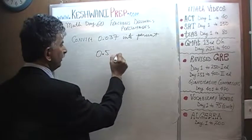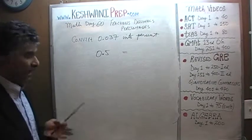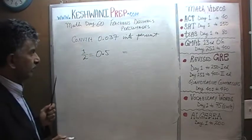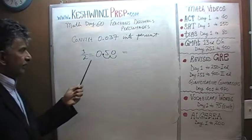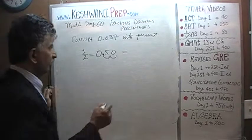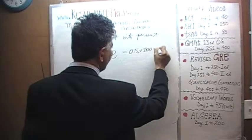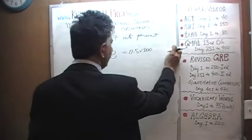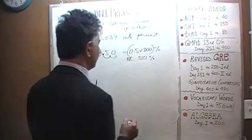For example, if they ask us to convert 0.5 into percent — we know 0.5 is half, and half is 50%. What we do is take our decimal and move it two spots: one and two. In other words, if you want to convert a decimal into a percentage, we multiply by 100. So 0.5 times 100% equals 50%.